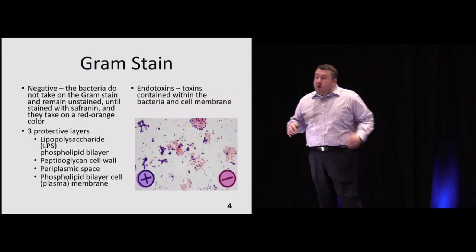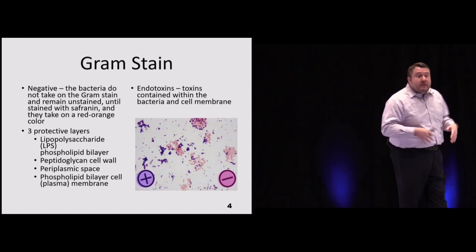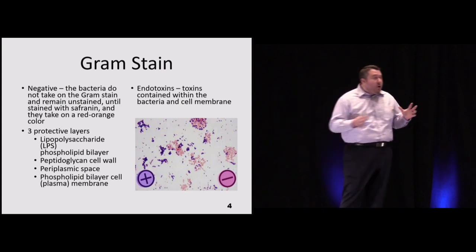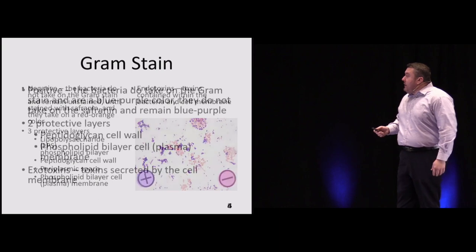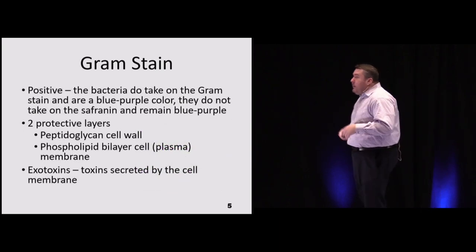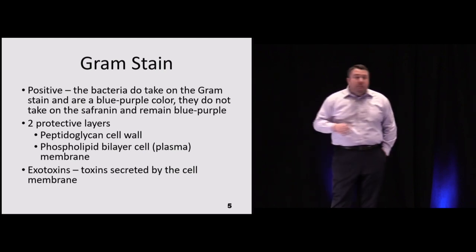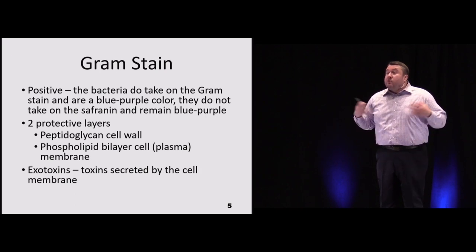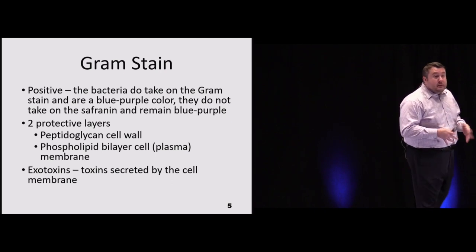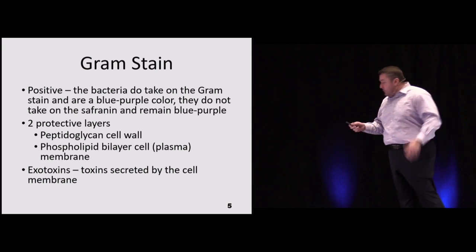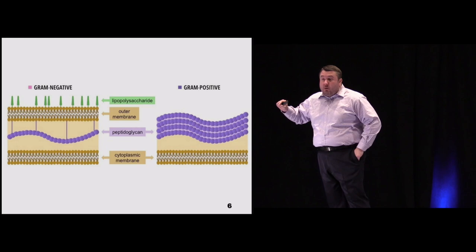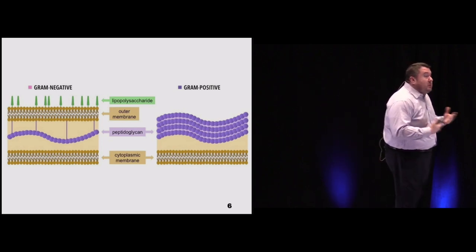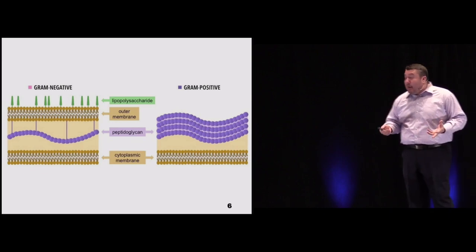The gram stain helps us quickly differentiate gram negative from gram positive. Gram negatives don't take the gram stain but do take the saffron stain; they have a more complex three-layer wall. Gram positives have only two layers — a glycopeptide wall and a plasma membrane. Both release toxins — endo- or exotoxins — that trigger the sepsis response, causing vasodilation and release of inflammatory mediators. Gram negatives have a thinner but more complex wall; gram positives have a thick wall with fewer layers.